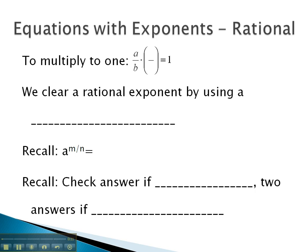If we had the exponent a over b to equal 1, we would want to multiply by b over a, because if we did, the a's and b's would divide out, leaving just the 1. This means we can clear a rational exponent by using a reciprocal exponent.